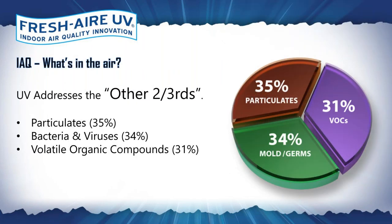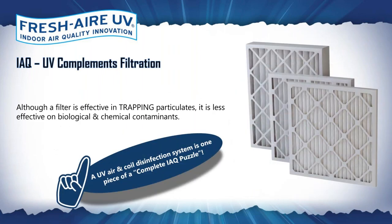If we look at the cross-section of contaminants in the air we're breathing, 35% would be particulate — dust, dander, and dirt — and that's addressed by the system's HVAC filter. But 65% of what's in the air — bacteria, viruses, mold, chemicals, odors, VOCs — all pass through a filter like sand through a tennis racket. So it's not about competing with filtration; it's a synergistic approach. It's using good quality filtration for the particulate, and ultraviolet light for what the filter doesn't address.